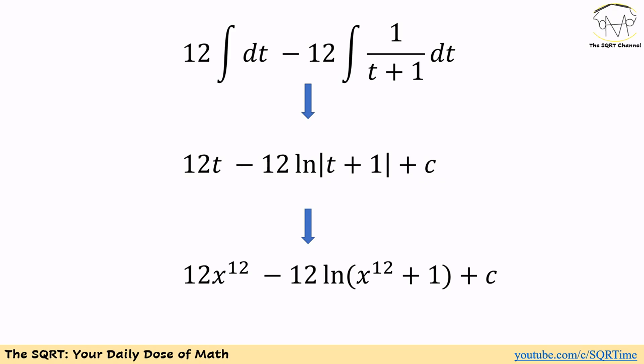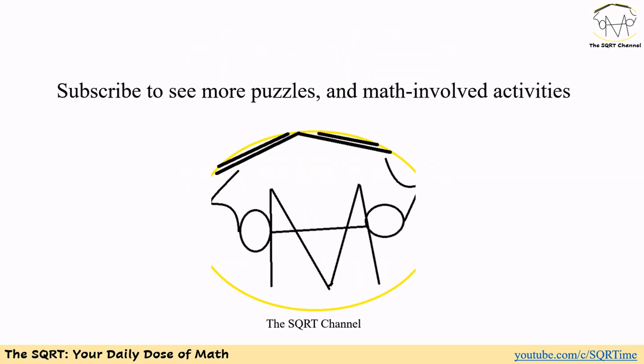Replacing t with x to the power of 1 over 12, the final answer is 12 x^(1/12) minus 12 ln of (1 plus x^(1/12)), plus constant C. We remove the absolute value because x^(1/12) plus 1 is always positive. Thanks for watching — if you would like to see more puzzles and math-related activities, please subscribe to the channel.